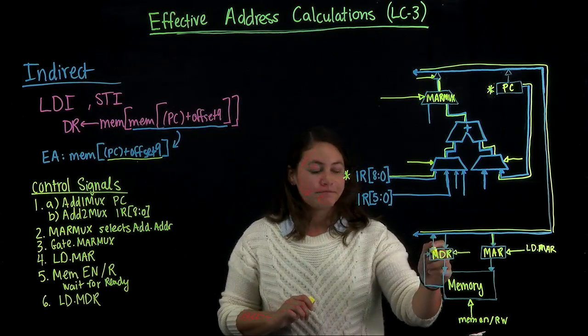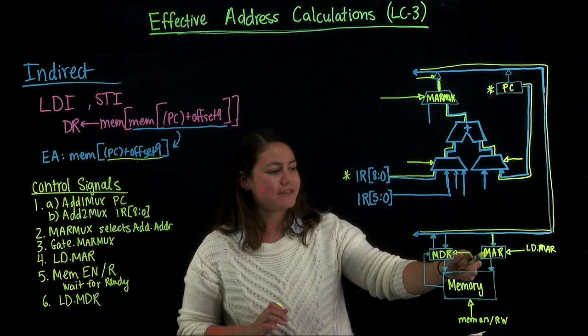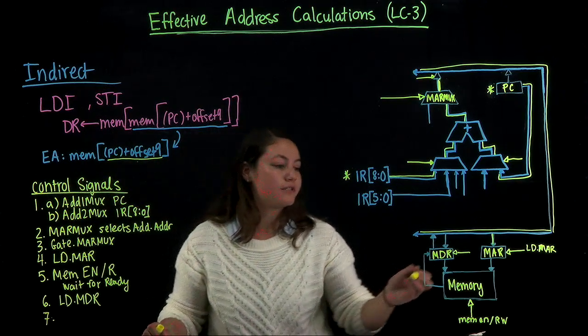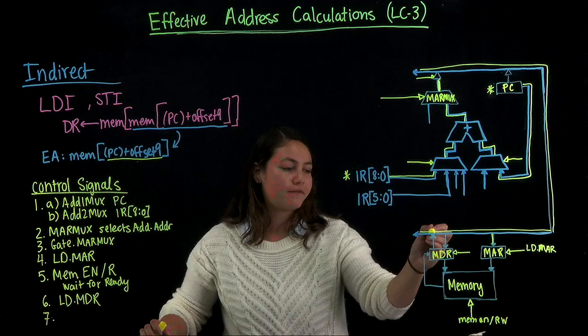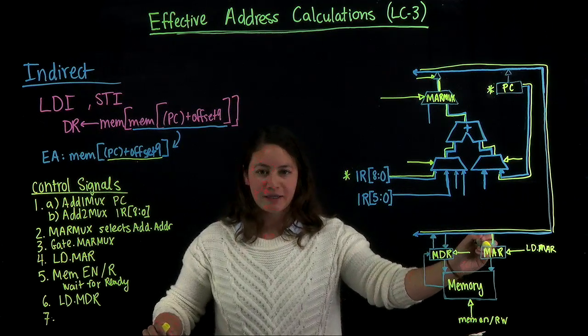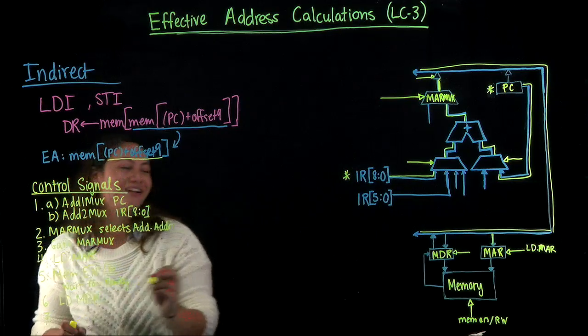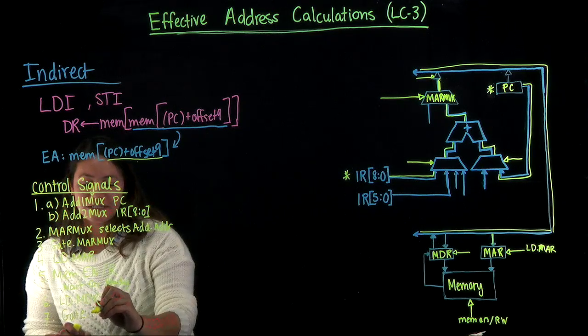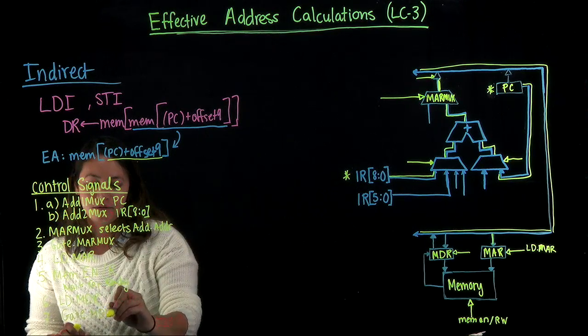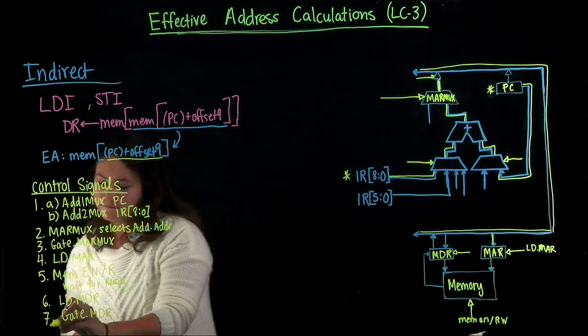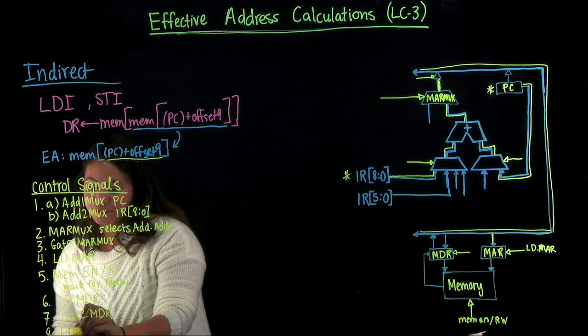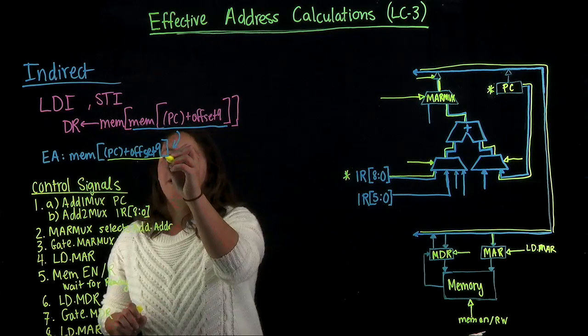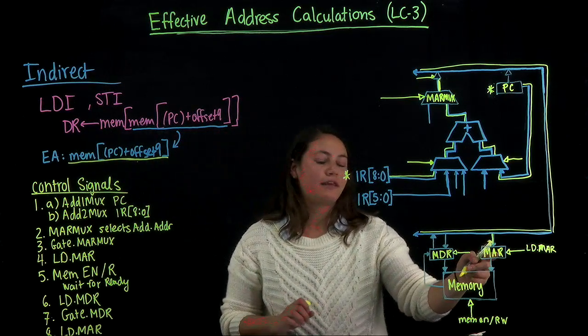Once we've done that, we should get the value back into the MAR. To do that, we just have to get the value back onto the bus by opening the gate. So we want to send a control signal to open the gate. And then our last control signal is going to be to load the MAR again. That would give us our full effective address in the MAR.